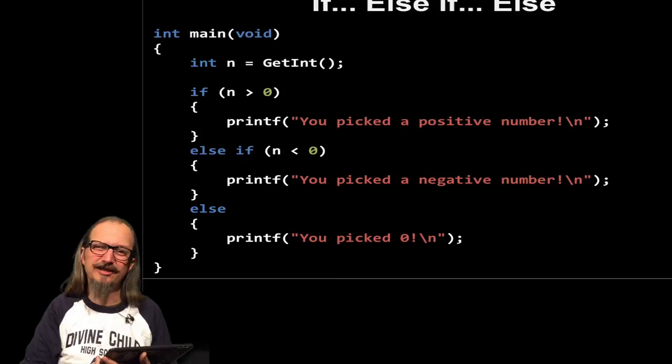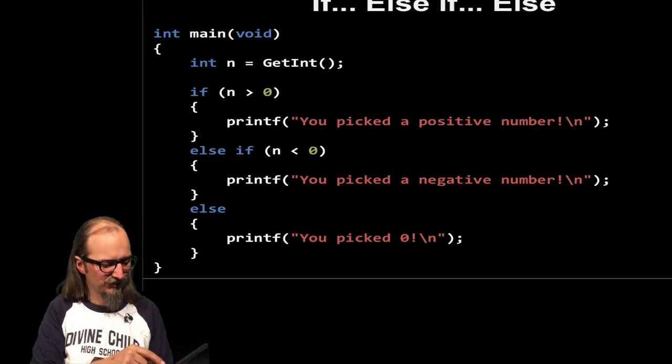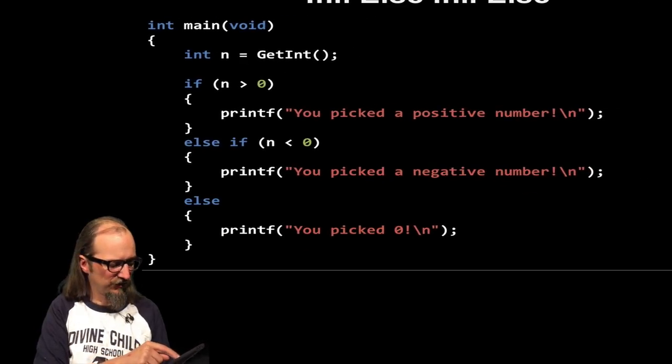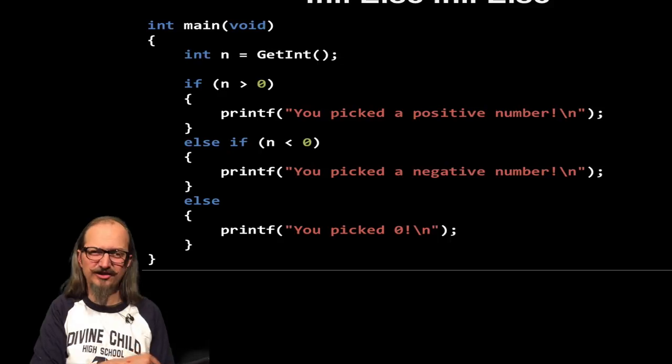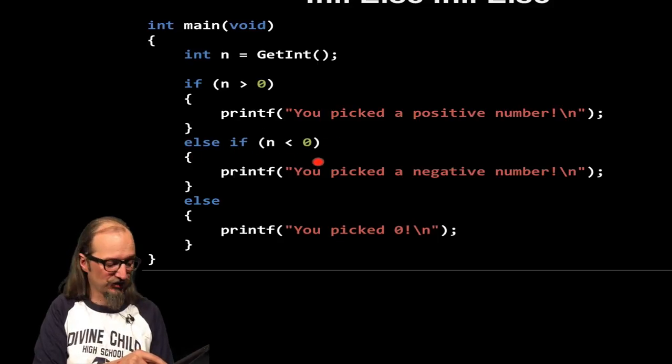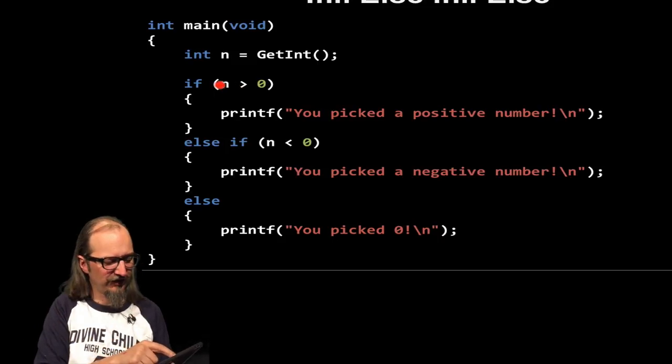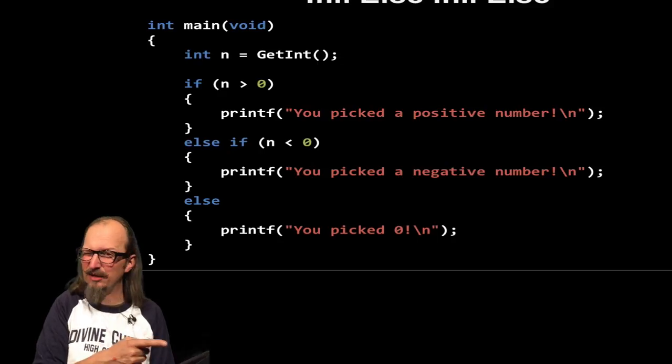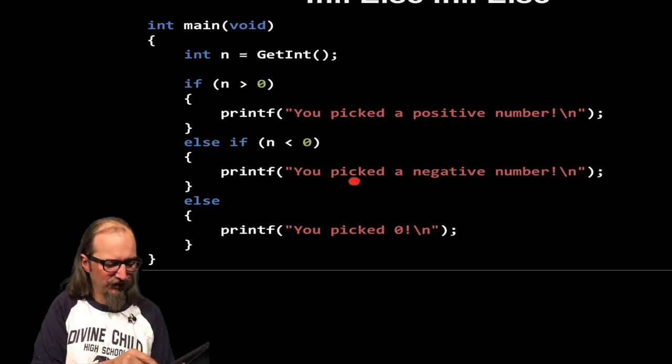Once we've realized we have an edge case, we need to fix our code for that. And so in this case, we can say, if n is greater than zero, you picked a positive number. If n is less than zero, wait, if, it doesn't say if, it says else if. So what it says is, if this is true, do this. Else, if this second statement is true, then do this. So in this case, we're stringing our else's together. So we say, if n is greater than zero, do this. If it's less than zero, else if, because if it's not greater than zero, it might be less than zero, do this. And then we got our final one. If both of these two statements are false, then we will do what's in our final else down here.